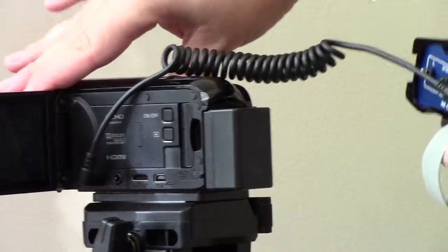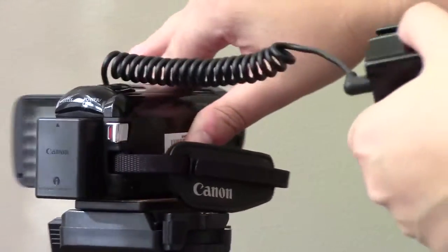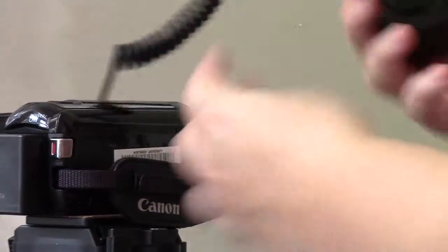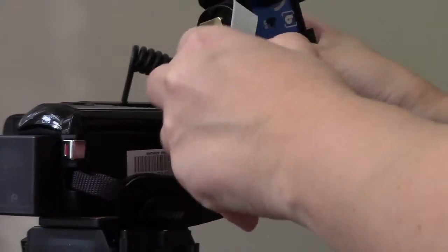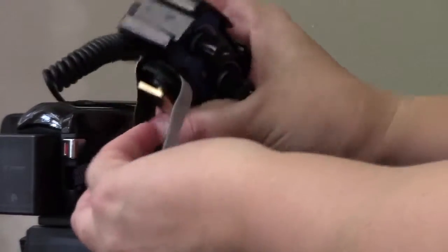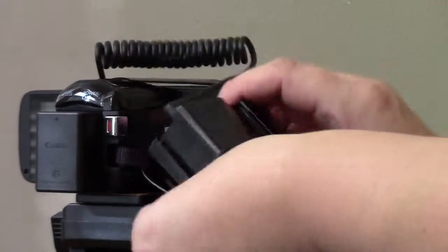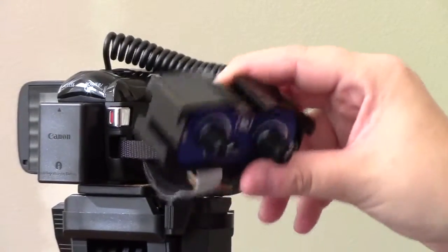Once you've done that, you want to make sure that you stabilize this piece so that it doesn't fall off. So you can use this Velcro to secure the audio splitter to the video camera. And then you just want to give it a little tug to make sure that it's not going anywhere.